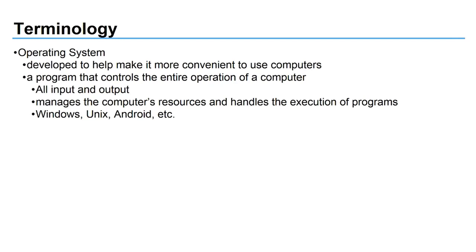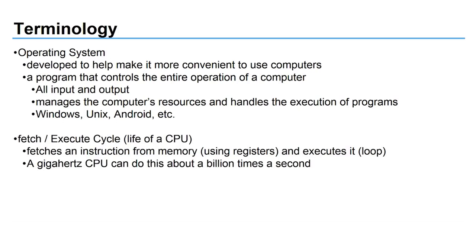An operating system is a completely separate class — there's a lot that goes into one, but understand the basics: it's just allowing you to use your computer in an easier manner. Some examples of common operating systems are Windows, Linux, Unix — which we'll talk more about when we discuss the history of C — Android for mobile devices, and iOS. These are specific programs that are very large and may contain many different programs that interact to make your life easier.